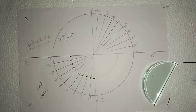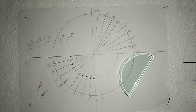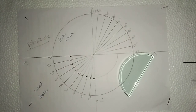Good morning students. In this lab activity, we are going to discuss what happens to the light ray when it travels from denser to rarer. Today we are also going to discuss the meaning of critical angle and the phenomenon of total internal reflection.